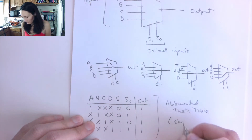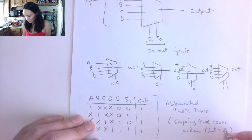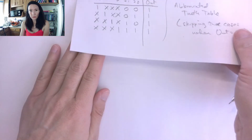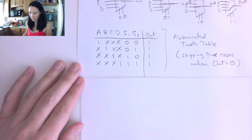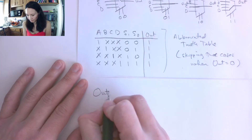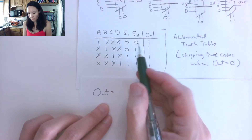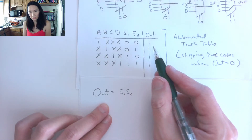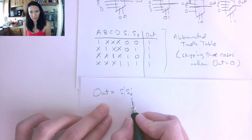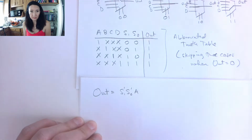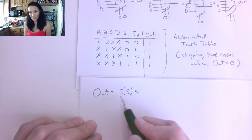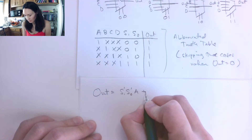This is what I mean by an abbreviated truth table — we're skipping the cases when output is equal to zero and are only concerned with when the output is high. So we can write the function for the 4-to-1 multiplexer. Our output is a function of inputs S1 and S0. If they're both equal to zero, for this first row of our abbreviated truth table, I'm going to put a NOT on both S1 and S0 and then AND that with A. This gives me my first product term, and this is going to be in sum-of-products form.